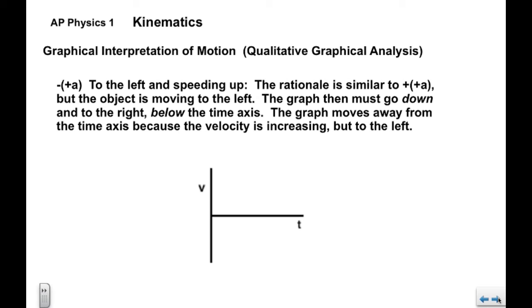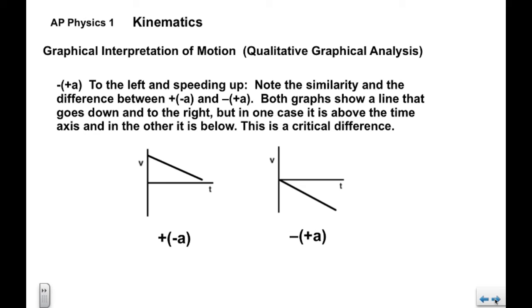For minus-plus A — to the left and speeding up — the object is moving to the left, so the graph has to be below the time axis. The graph goes down and to the right, moving away from the time axis because the velocity is increasing in a negative sense. Note the similarity between plus-minus A and minus-plus A: both graphs show a line going down and to the right, but for plus-minus A it's above the time axis, while for minus-plus A it's below — a critical difference in the type of motion.